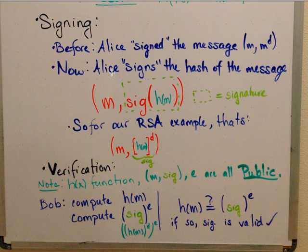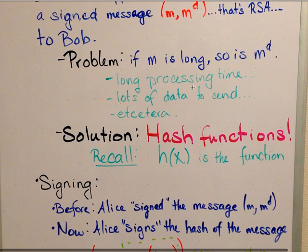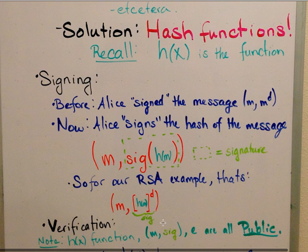Now with hash functions, Alice signs the hash of the message. So what she sends is m, the message — remember it's not supposed to be hidden for signatures — along with the signature of the hash. You can see h of m, the hash of the message, and then the bright green is the signature itself. For RSA, we take the hash and treat it like the message itself: instead of m to the d, we put the hash of m to the d. So the hash of m to the d is our signature.